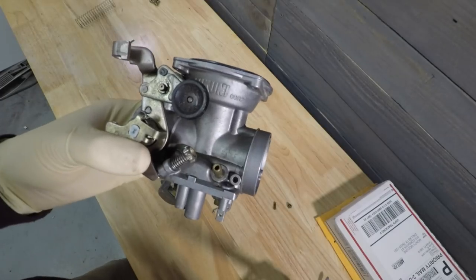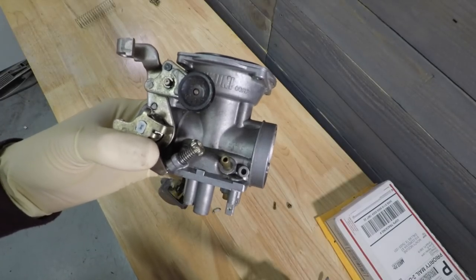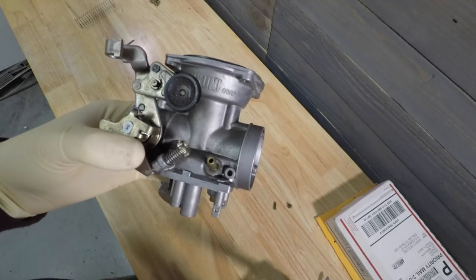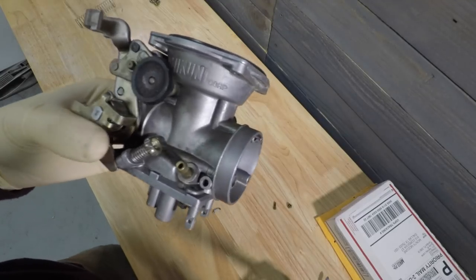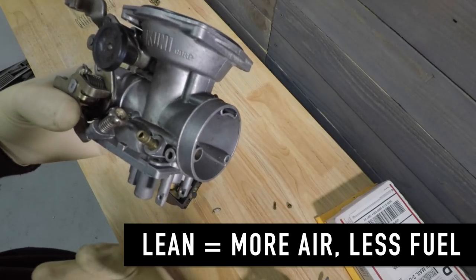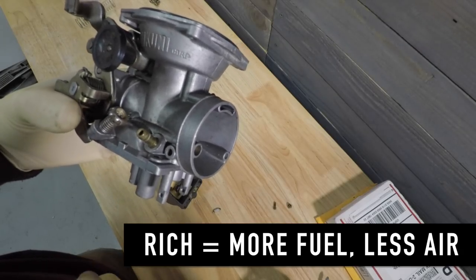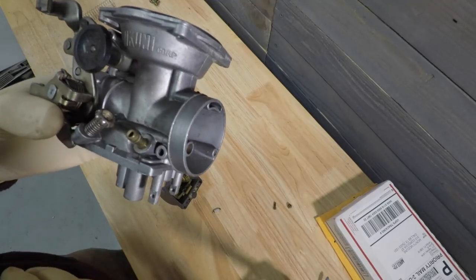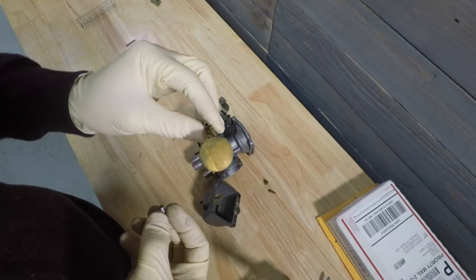And so there's a couple terms that you might hear and you may or may not understand them. But lean or rich—lean is when the air fuel mixture has more air than fuel, and rich is when there's more fuel than air. So if you ever wondered, finally...